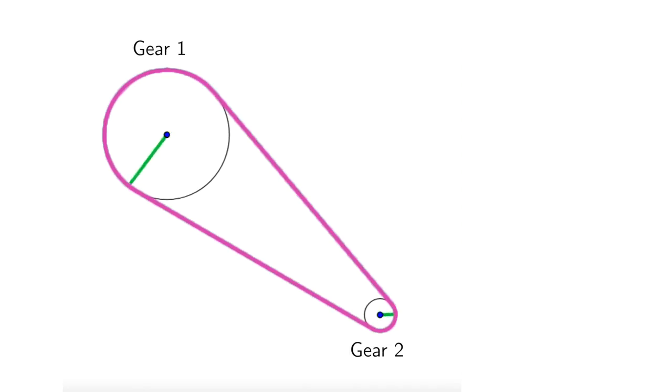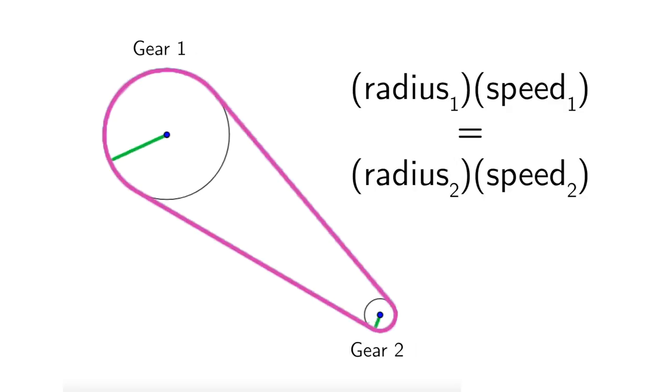There's a simple relationship between the rotational speeds of the two gears. In a gear chain, the product of a gear's radius and its rotational speed is the same value for each gear.